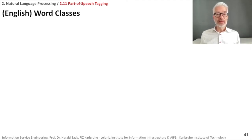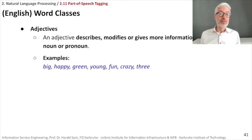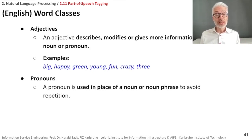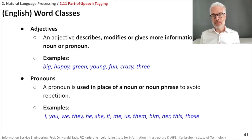Next among the word classes are adjectives. Adjectives further describe or modify and give more information about nouns or pronouns — like big, happy, green, young, fun, and so on. And talking about pronouns: a pronoun is used in place of a noun or noun phrase simply to avoid repetition. So I, you, we, they, he, she, it — these are pronouns, used to avoid repeating a proper noun when talking about a specific person or thing.